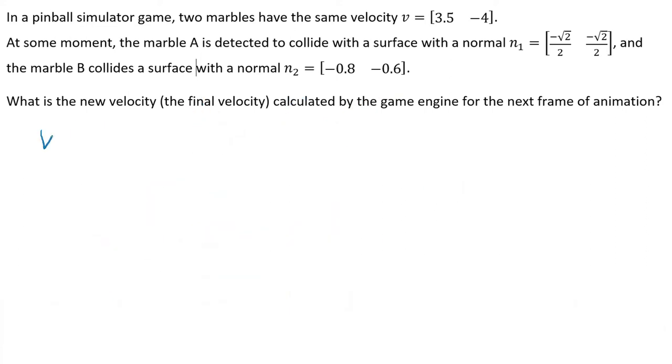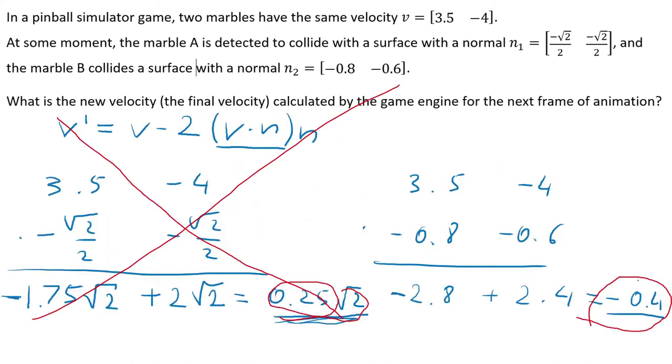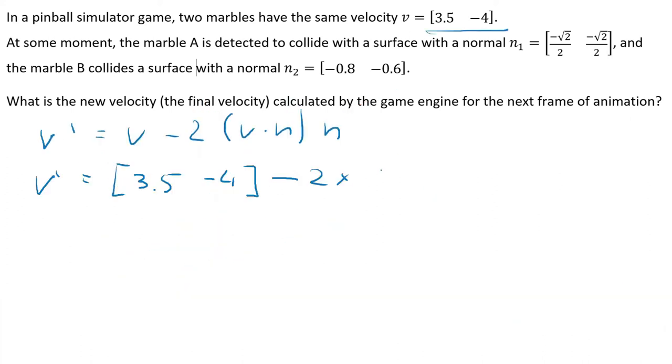So now the formula is v dash equals v minus 2 v dot n times n. But we know a lot of things. So v dash, the velocity vector is this thing here. It's 3.5 negative 4 minus 2 times, this is just a regular multiplication, it's not a cross product. So it's 2 times v dot n. V dot n we have calculated, it's negative 0.4. So it's 2 times 0.4, and it's negative, so I will change this to plus, multiplied by normal. Normal is this one, that's our normal. So multiplied by negative 0.8, negative 0.6.